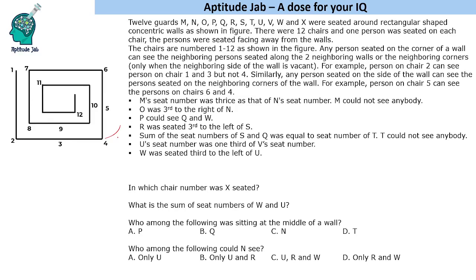This set says that there are 12 guards and they are seated around rectangular shaped concentric walls as shown in the figure. These are numbered 1, 2, 3, 4 and so on up to 12. Now these chairs, one person on each chair and they were facing away from the walls, facing outside from the wall. A person seated on the corner of a wall can see the neighbouring persons seated along the two neighbouring walls or the neighbouring corners, and corners only when the neighbouring side of the wall is vacant.